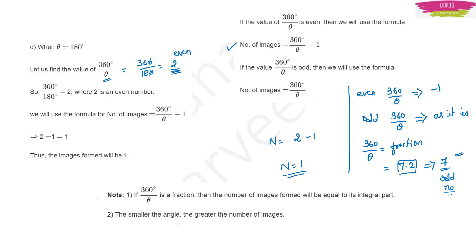The second important note: the smaller the angle, the greater the number of images. This is because θ is in the denominator of 360/θ — a smaller θ gives a larger value, meaning more images. So remember: smaller angle between the plane mirrors → greater number of images.